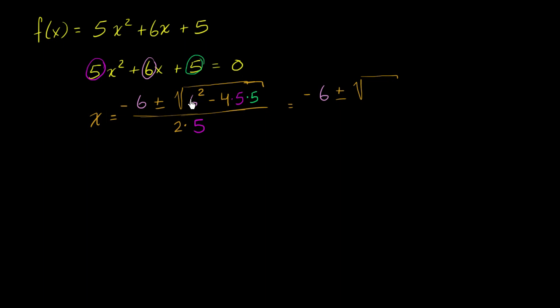This is 36 minus 100, so negative 64, all of that over 2 times 5, all of that over 10.